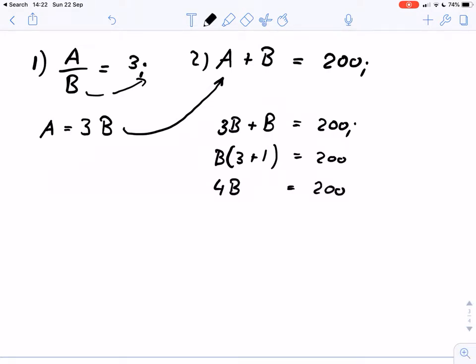And that's very easy to solve. We divide both sides of the equation by 4 and we get B equals 200 divided by 4 equals 50. And this now we can very easily put back into this equation.